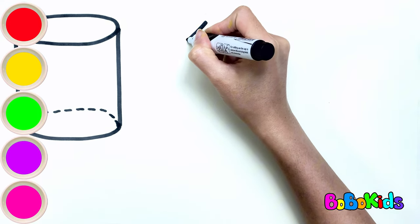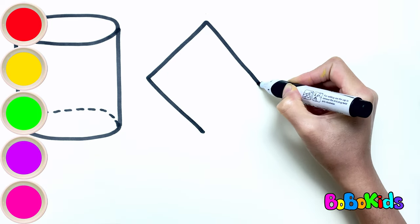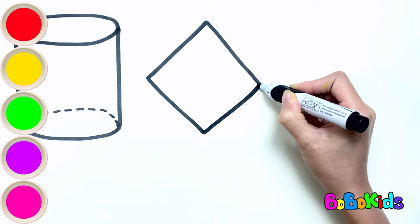Next is the 3D lozenge. Draw a lozenge with 4 equal lines. Then draw more lines to connect them into a 3D lozenge.